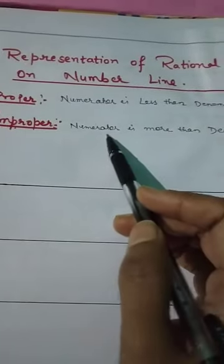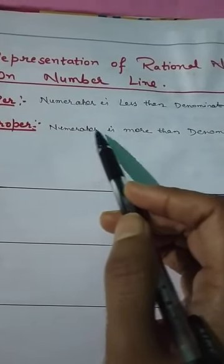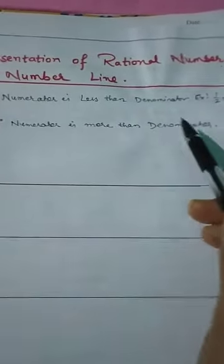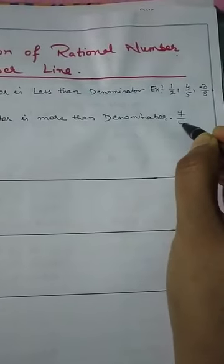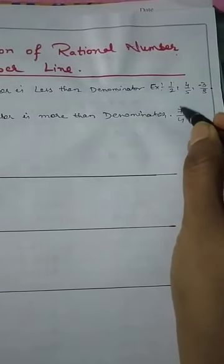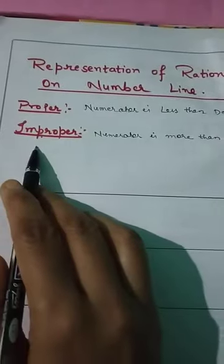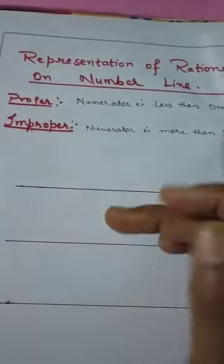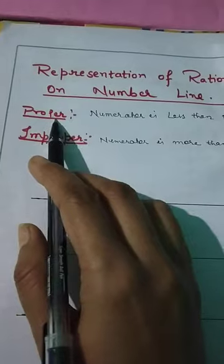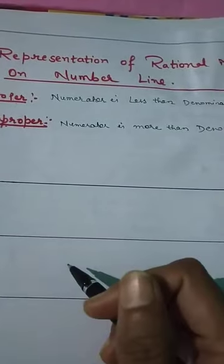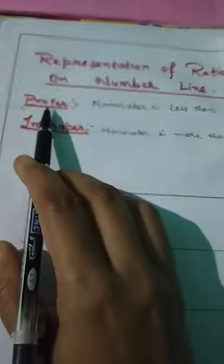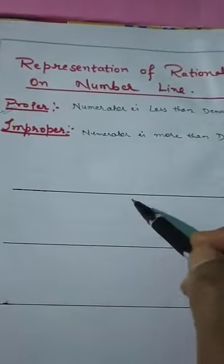Similarly, an improper rational number is one where the numerator is more than the denominator — like 7/4. You can see the numerator is more than the denominator; it is called improper. There is a different method to plot proper rational numbers and improper rational numbers on the number line. First we will learn how to plot the proper rational number.